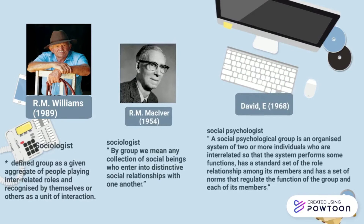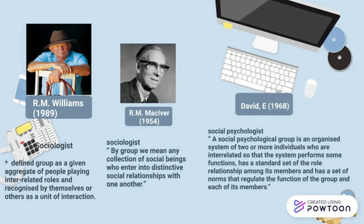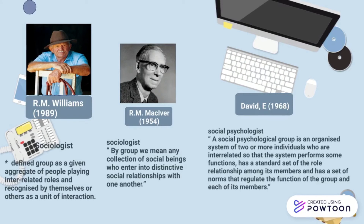Next is David, a social psychologist. David defined a group as follows: a social psychological group is an organized system of two or more individuals who are interrelated so that the system performs some function, has a standard set of role relationships among its members, and has a set of norms that regulate the function of the group and each of its members. The people in the group communicate and interact with each other, and it has certain laws, regulations, and expectations that must be met by all members.